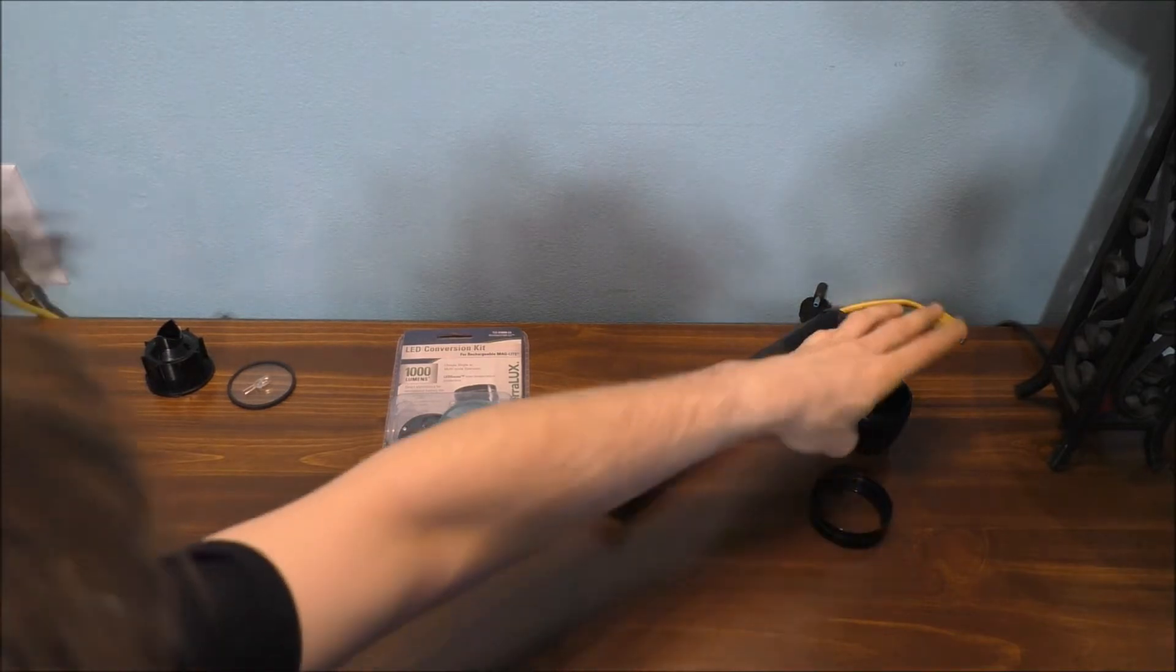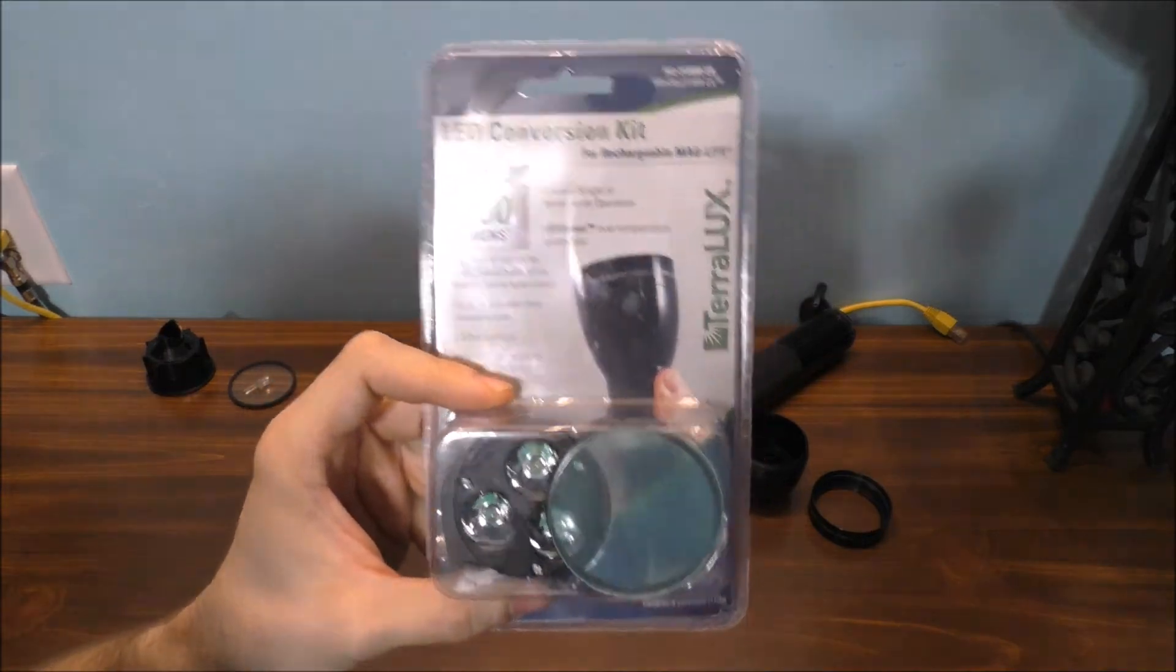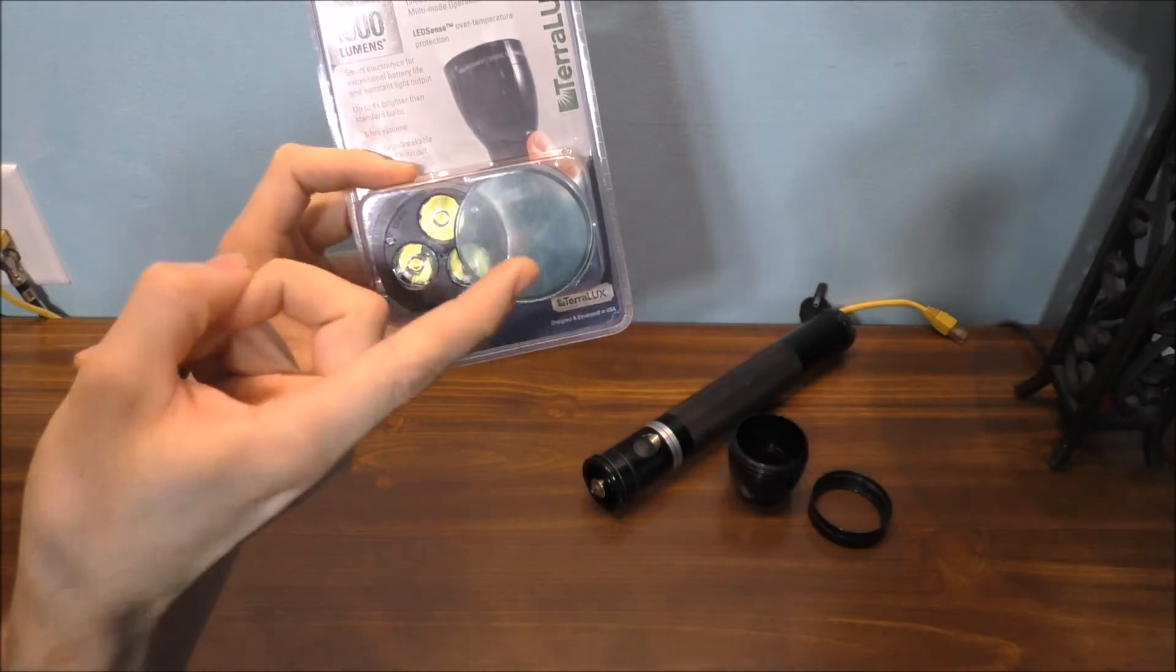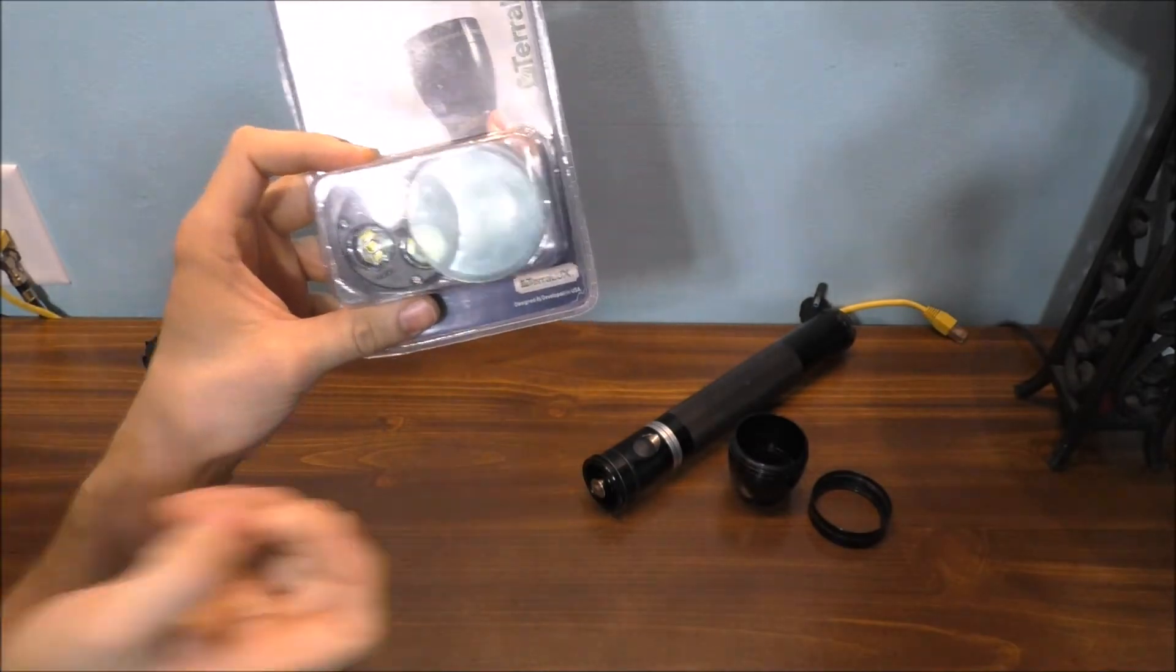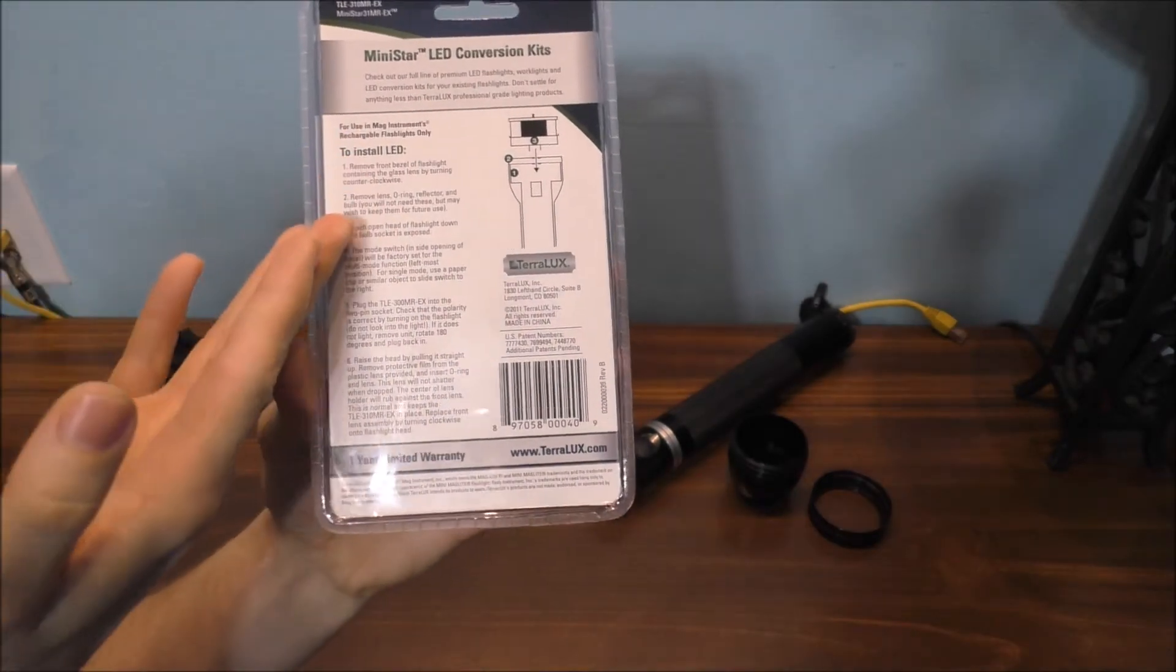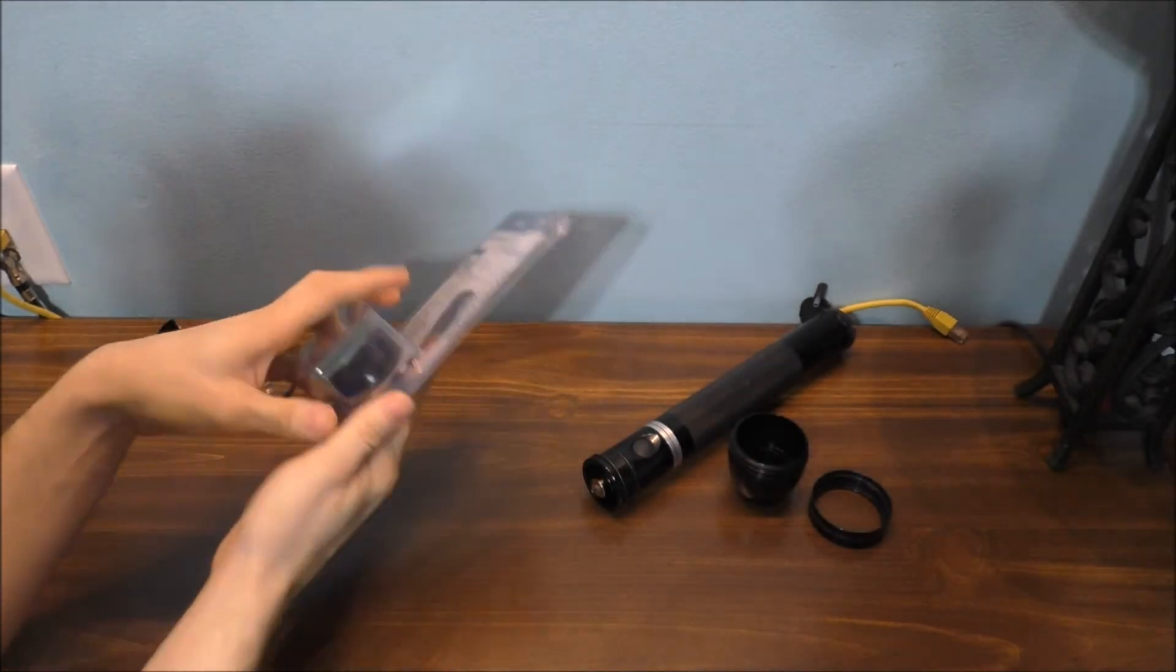Here is the old rechargeable mag sitting here, and again here's a couple of the components. But basically here is the upgrade kit for the rechargeable mag light. Of course there's the bulb, there's the lens, and there's the reflector.